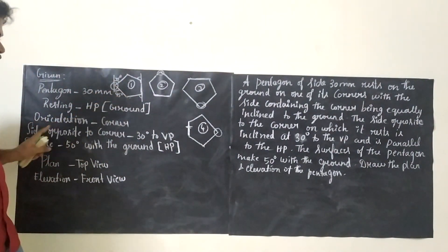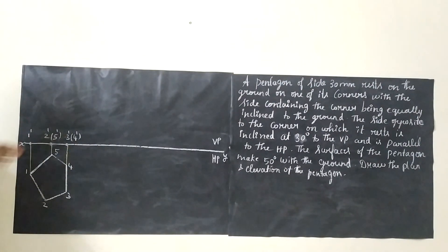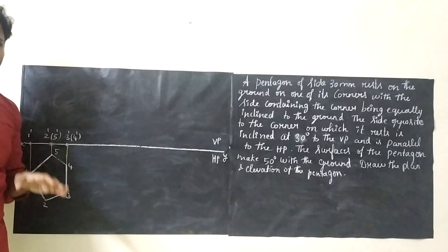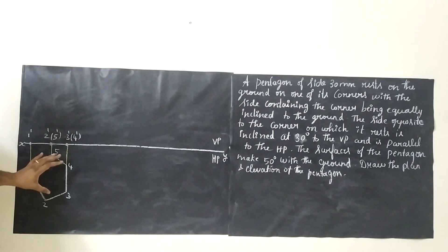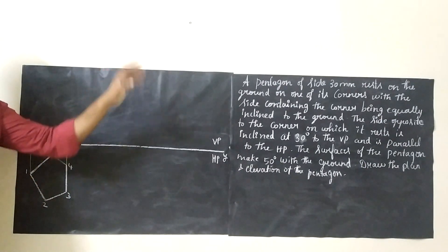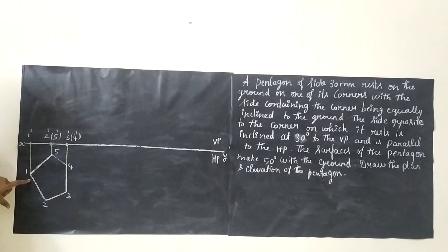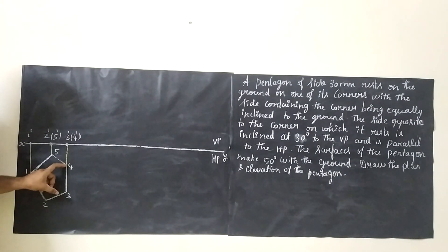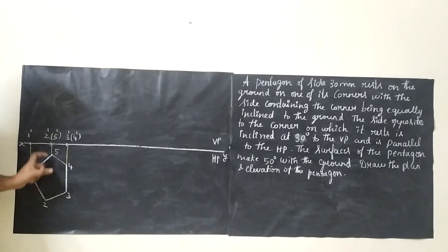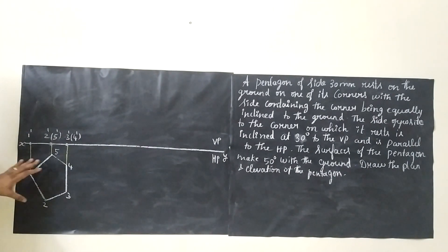The true shape of the pentagon can be seen only from the top view, so we start our basic diagram with the top view. We take the first pentagon orientation because this corner is equally inclined — the angle between the two sides is 45 degrees each. Draw the base for 30 mm, take 72 degrees on each side, draw lines of 30 mm, and complete the diagram. After completing, name the corners 1, 2, 3, 4, 5 — top view.